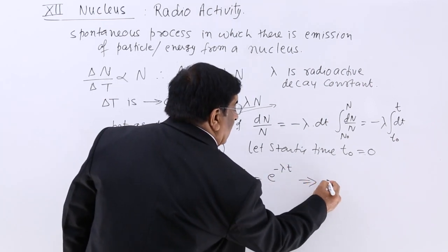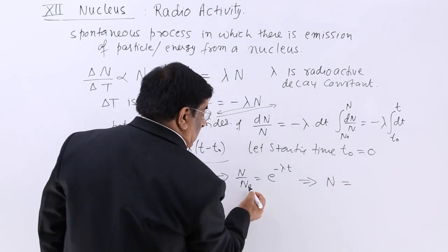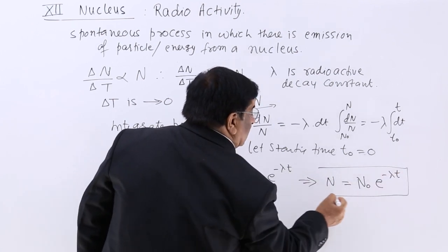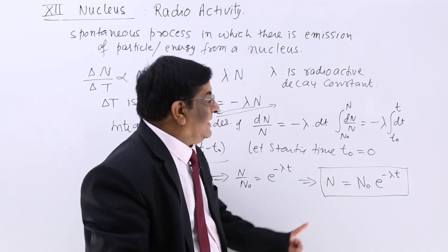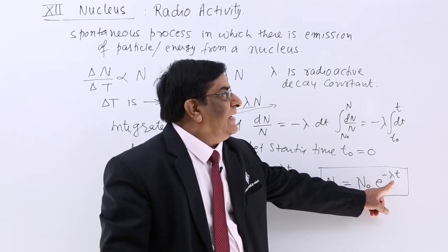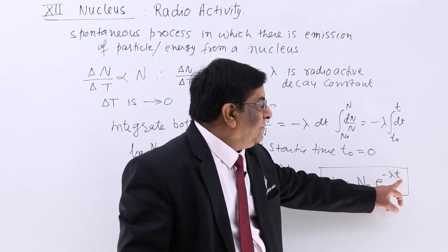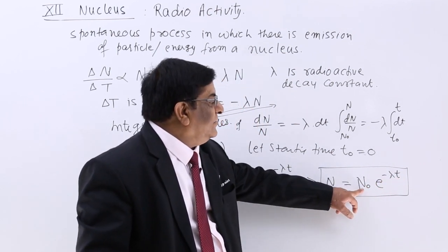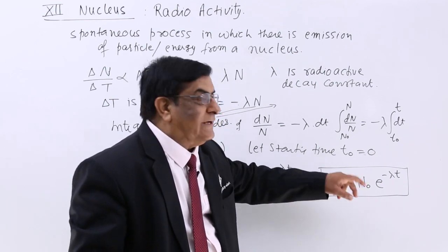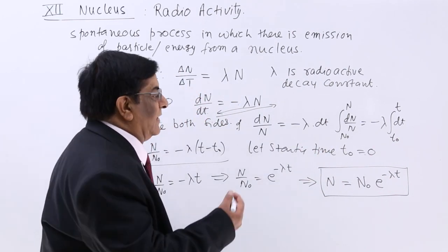This gives us the radioactive decay law: N equals N₀ e^(minus lambda t). This says that N₀ is the initial number of nuclei, lambda is the radioactive decay constant, t is the time elapsed, and N is the number of nuclei remaining at time t. This relation is the radioactive equation.